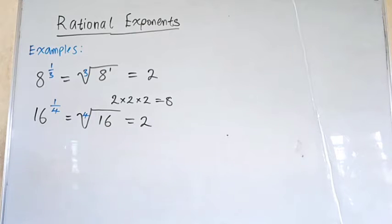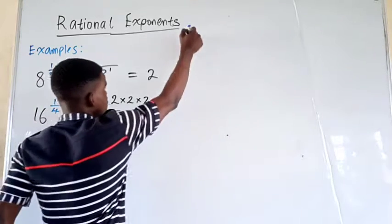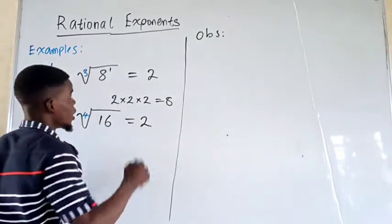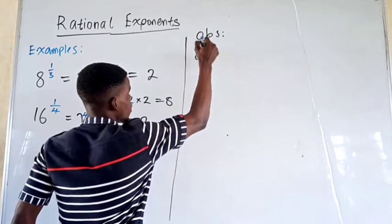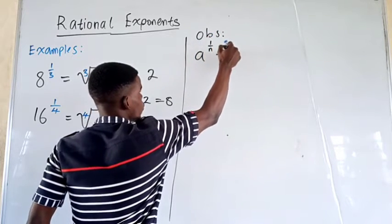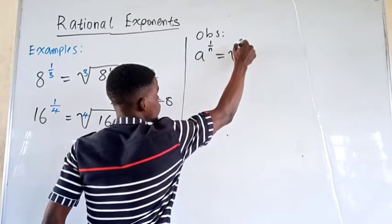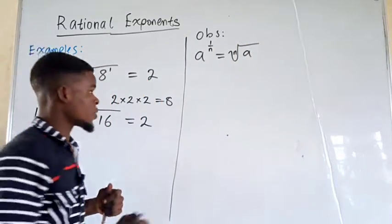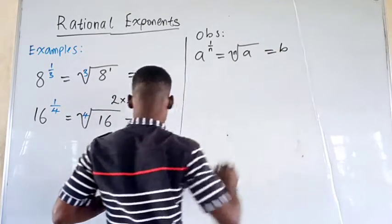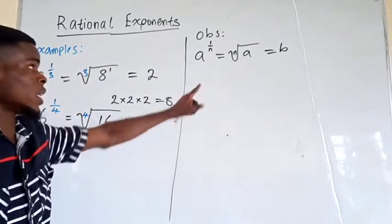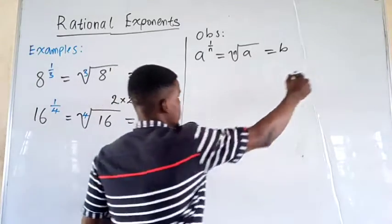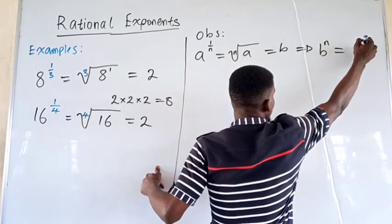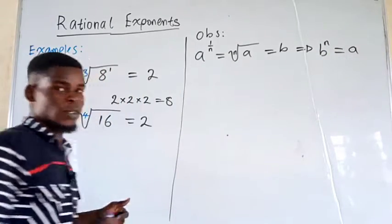So you observe a pattern now. The first thing you should observe — let me just put this down as our observations — is that if a raised to the power of 1 over n, which is the nth root of a, gives us b, it means that b raised to the power n is going to give us a. From the first two examples, that's what you get.